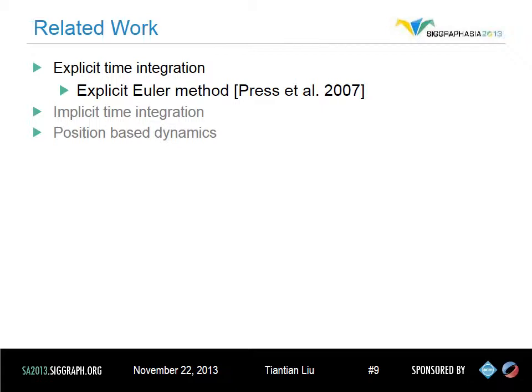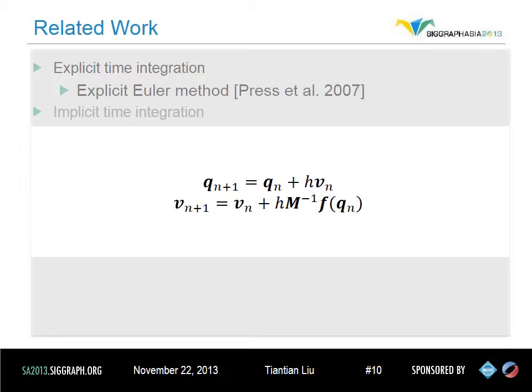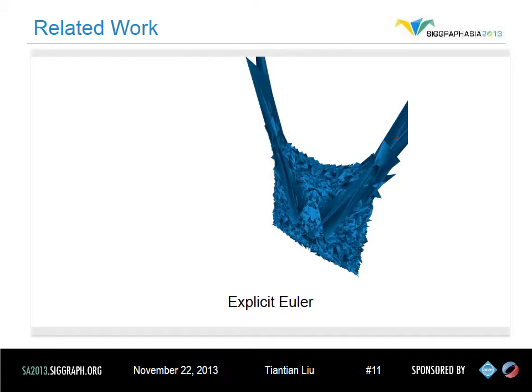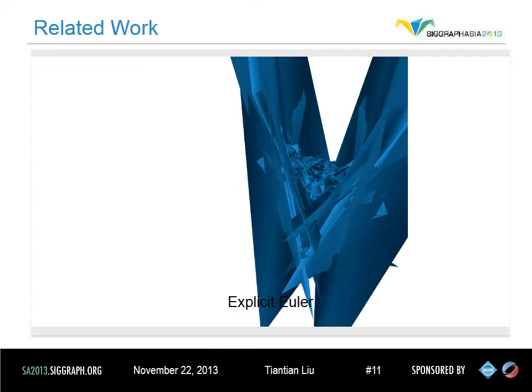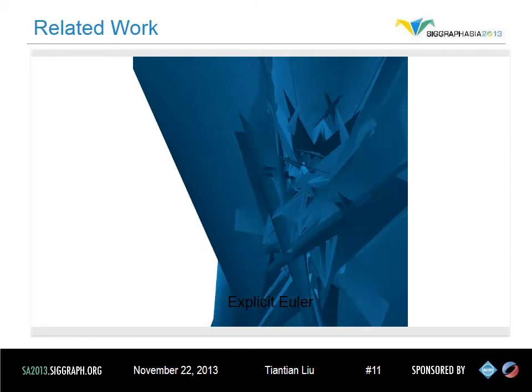Explicit Euler method is the most intuitive implementation of time integration. Here, h is the time step size, m is a diagonal mass matrix, q is the position vector of all the vertices, v is the velocity vector, and f is the force. It's called an explicit method because all the unknown variables are on the left-hand side of the equation. Once we know the current quantities, we can calculate the next time quantities explicitly. The problem is that explicit Euler's method injects extra energy into the system, so simulation can be very unstable. The larger the time step, the more likely the simulation will explode.